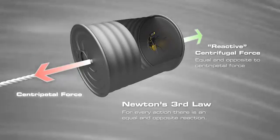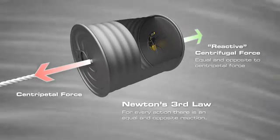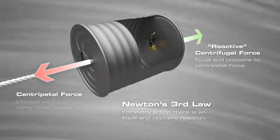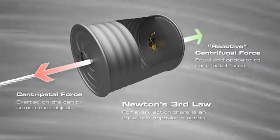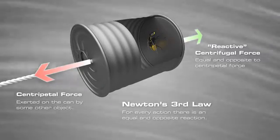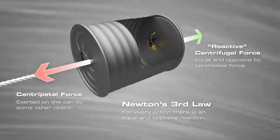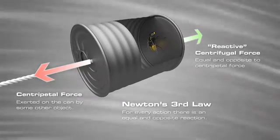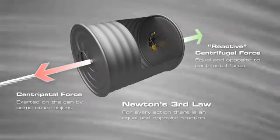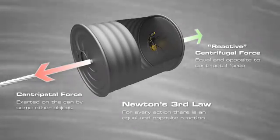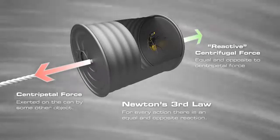This centripetal acceleration is provided by a centripetal force, which is exerted on the can by some other object. This is the reactive centrifugal force. It is directed away from the center of rotation and is exerted by the rotating can on the object that originates the centripetal acceleration.